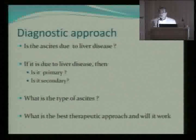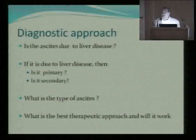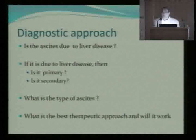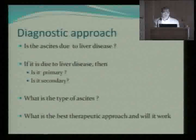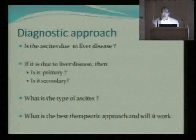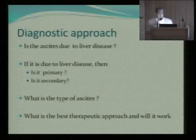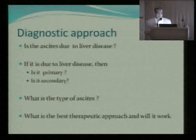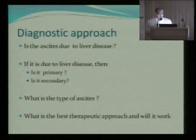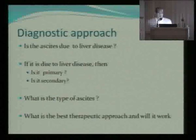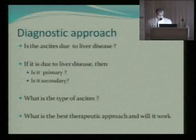If you answer that question positively, then you have to think about whether it is primarily related to the liver or secondary — whether there is any other systemic problem. What is the type of ascites? What is the best therapeutic approach and will it work?